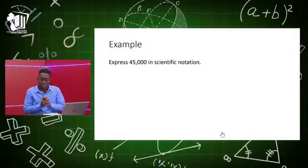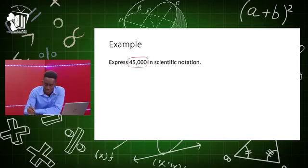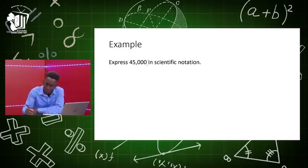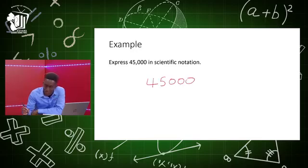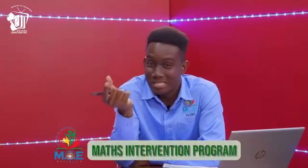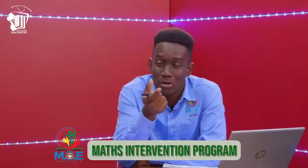The first example: express 45,000 in scientific notation. Since 45,000 is greater than 1, the power we raise 10 to must be positive. There's also another term used for scientific notation — standard form. Both scientific notation and standard form mean the same thing and are used interchangeably. In your exam you may see either phrase, so remember they both mean the same thing.